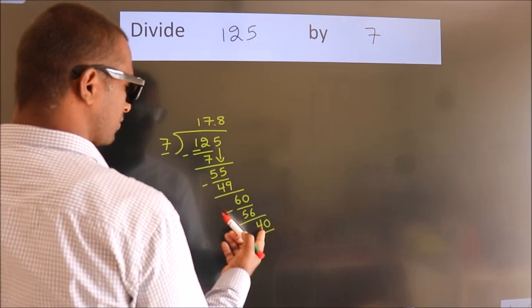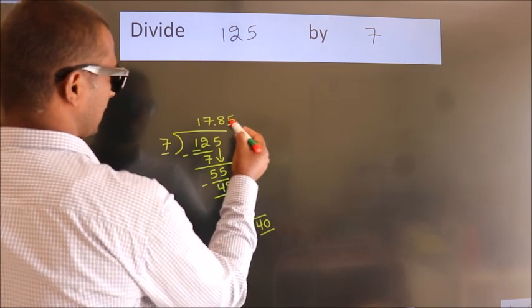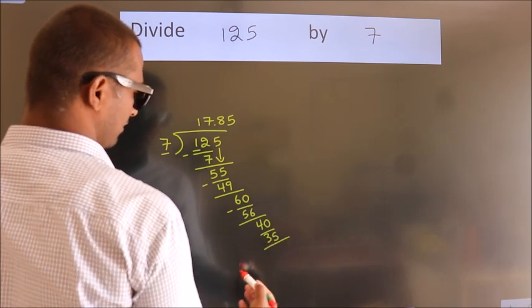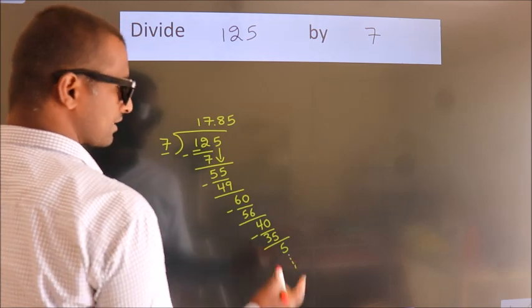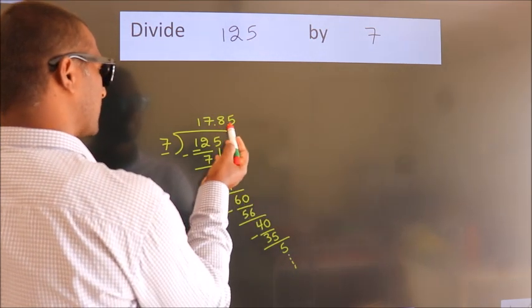A number close to 40 in the 7 table is 7 fives, 35. Now we subtract. We get 5. And the division continues. It is enough if we do up to 2 decimal places.